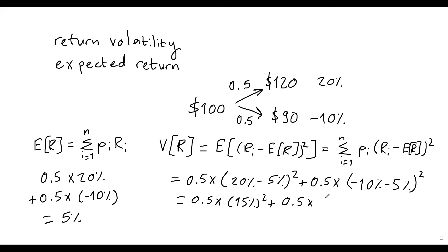0.5 times minus 15% squared. And of course, 15% squared is the same thing as minus 15% squared. So I can actually simplify this. So 0.5 times 0.5 is 1. So this is simply 15% squared.